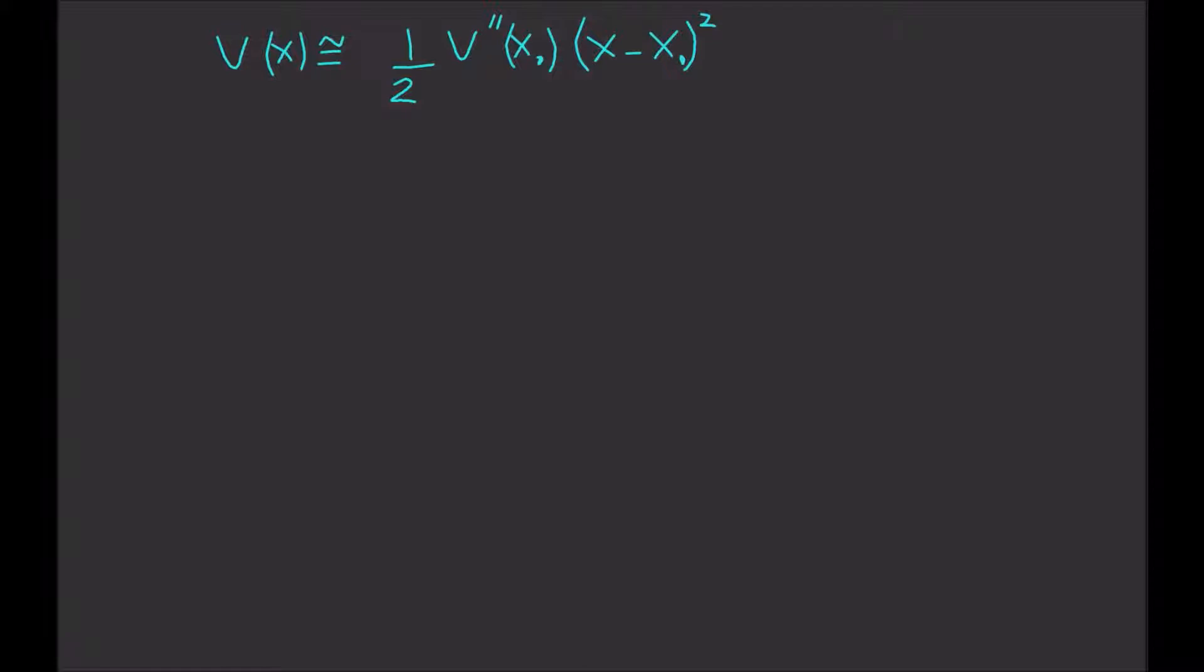For our quantum problem, we need to solve the Schrödinger equation for this potential: V(x) equals one-half m ω² x². These two things are the same thing, so this is our potential function.